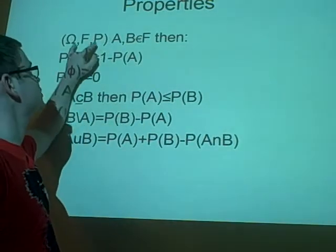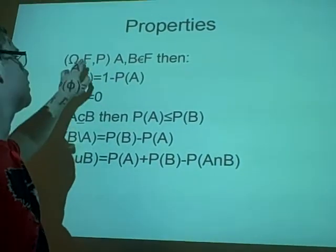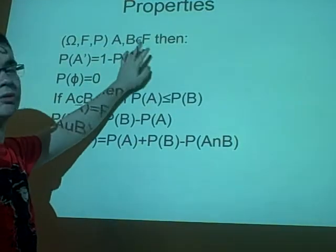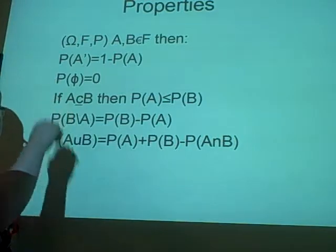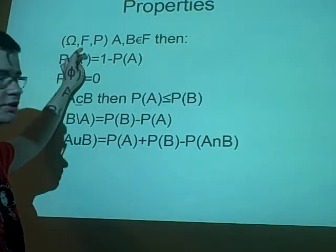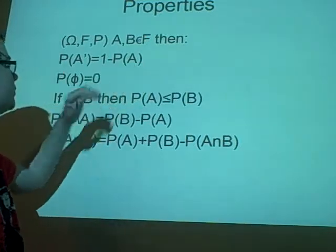Right, now first, say that this is a probability space, omega, F and P, and A and B are both in F, then the probability that it's not A, which is represented by this dash, is 1 minus the probability that it is. Does that make sense?